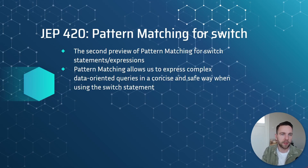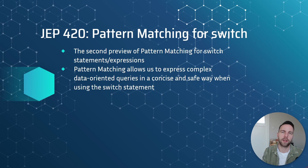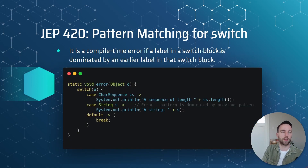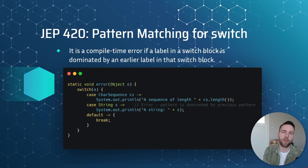Then JEP 420: Pattern Matching for Switch. This is the second preview of pattern matching for switch, which was introduced last Java release. Pattern matching basically allows us to express complex data-oriented queries in a concise and safe way when using switch statements or switch expressions. They now made it a compile-time error in a switch block when it is dominated by an earlier label in that switch block.